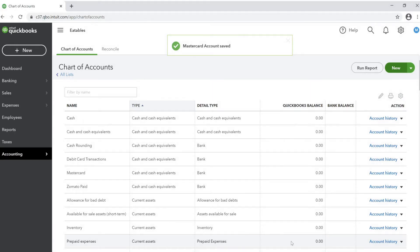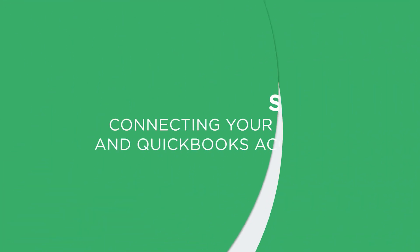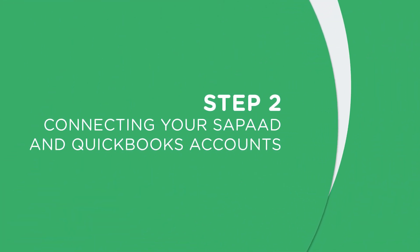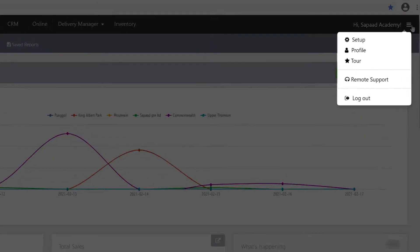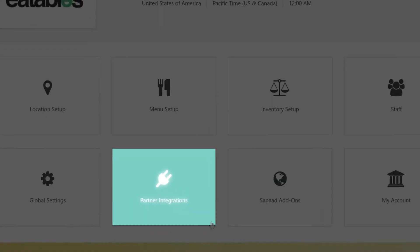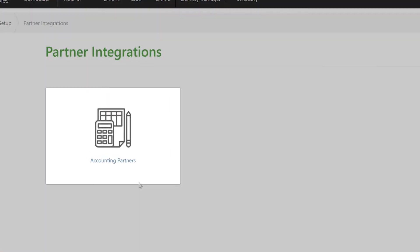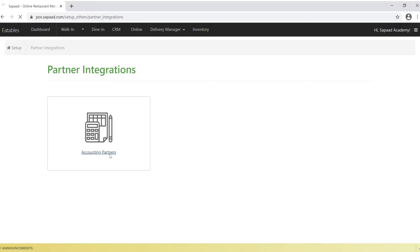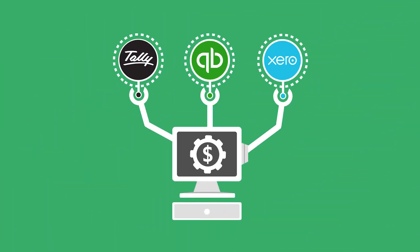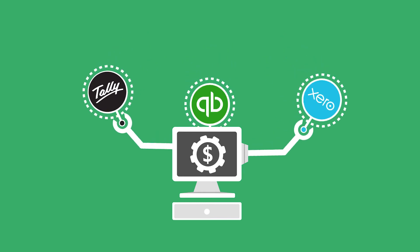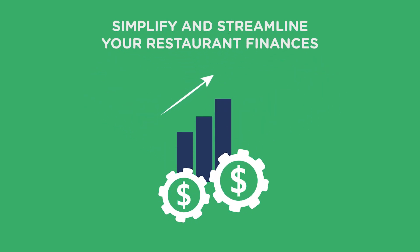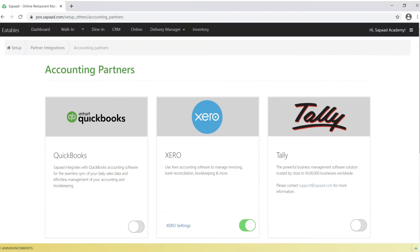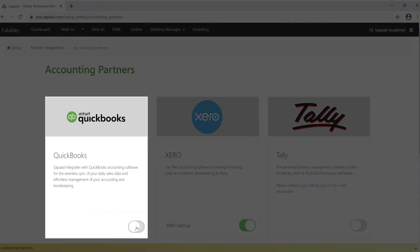We can now proceed to step two: connecting your SAPAD and QuickBooks accounts. In SAPAD, visit the settings area. Click on partner integrations and select accounting partners. SAPAD is seamlessly integrated with leading third-party accounting and payment platforms worldwide to simplify and streamline your restaurant's finance operations. Under QuickBooks, click the toggle switch to on.